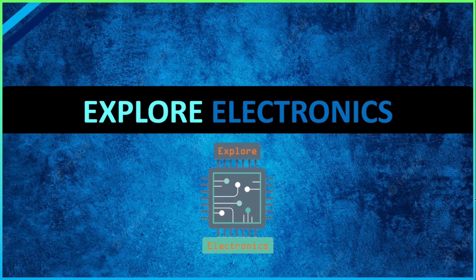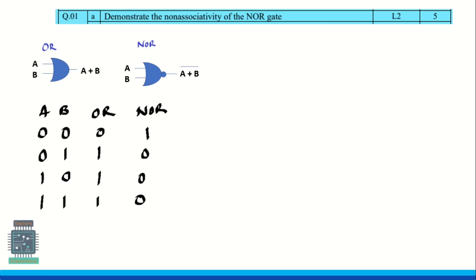Hey guys, welcome back to Explore Electronics. In this video let us understand associative property, that is associativity, with respect to OR gate and NOR gate. In the question they have asked to demonstrate the non-associativity of NOR gate. So first let us understand non-associativity of OR gate first.